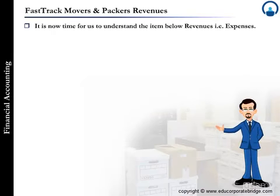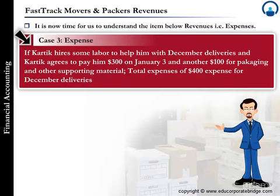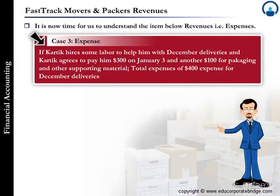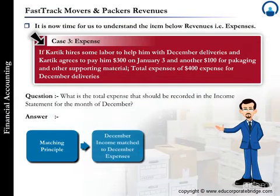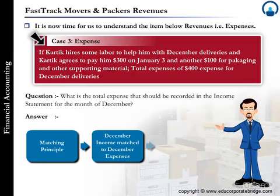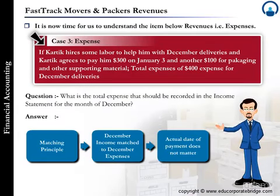It is now time to understand expenses — Case Study 3. If Karthik hires labor to help with December deliveries and agrees to pay $1,300 on January 3, plus $1,100 for packaging and other supporting material, the total expenses are $1,400 for December deliveries. Known as the matching principle, the December income statement should show expenses incurred during December regardless of when the company actually paid them. What matters is when the work was done — when the expense was incurred.